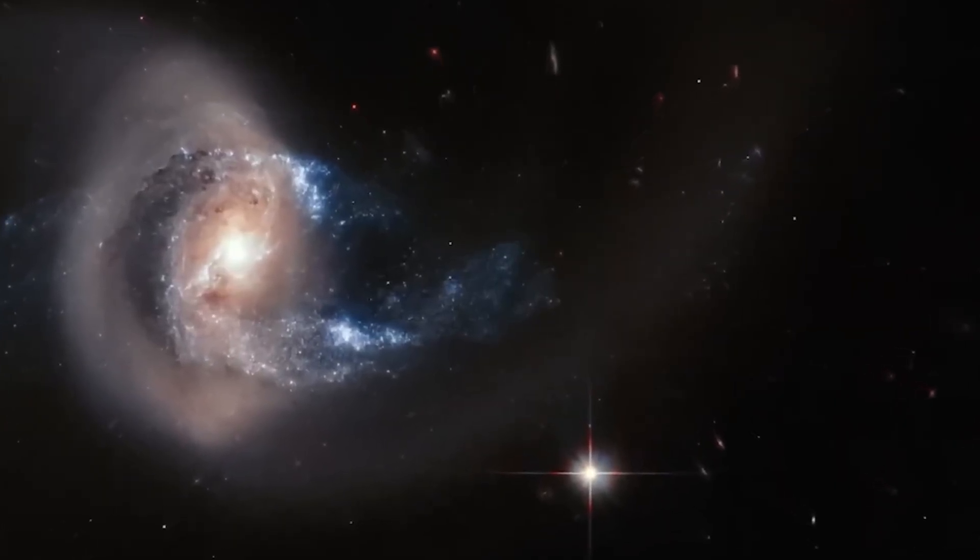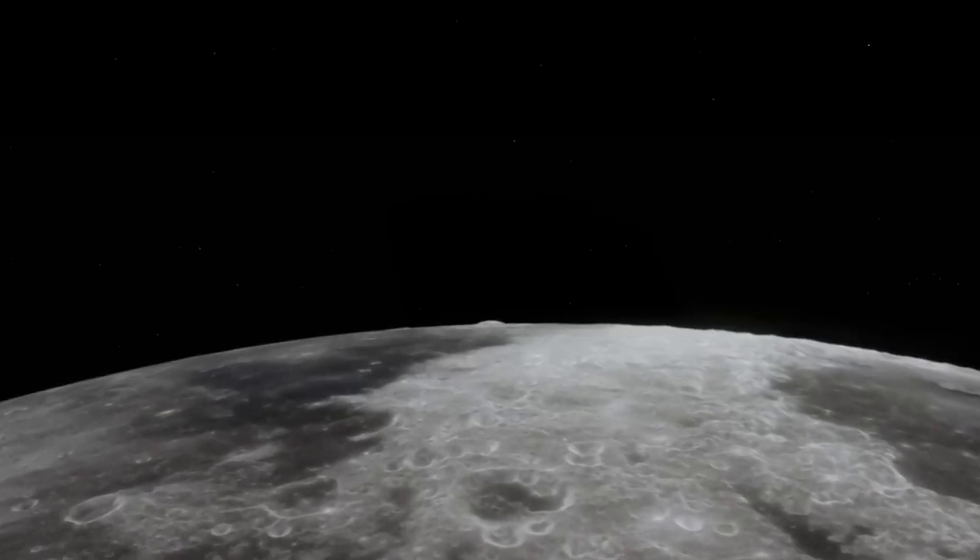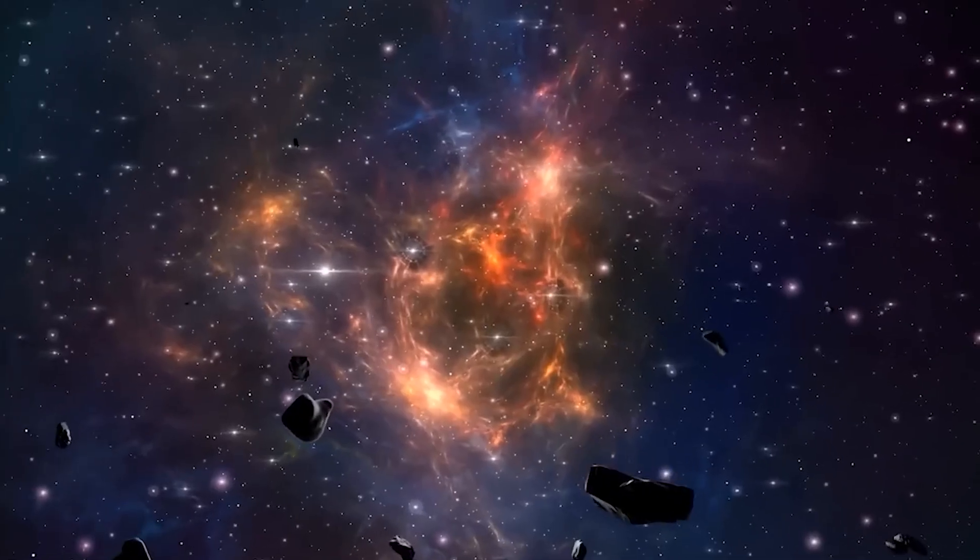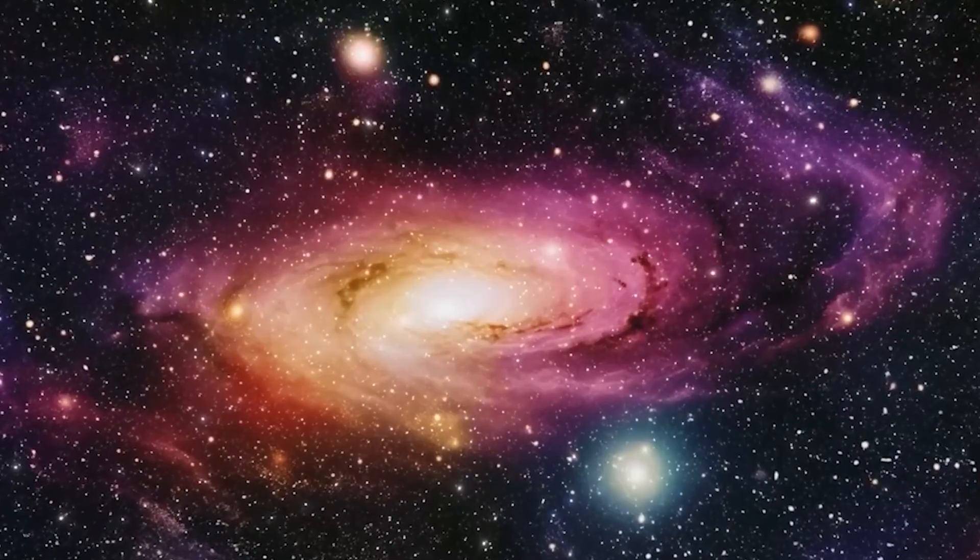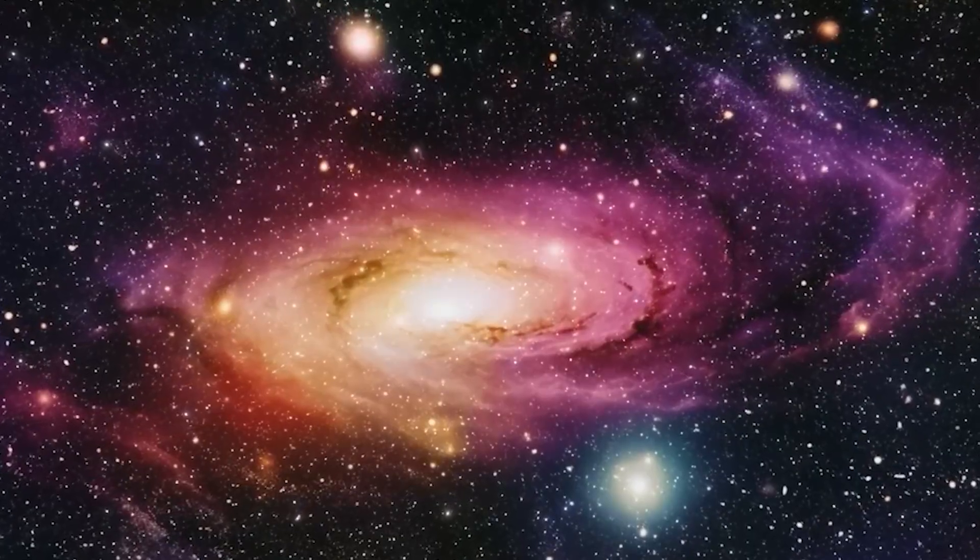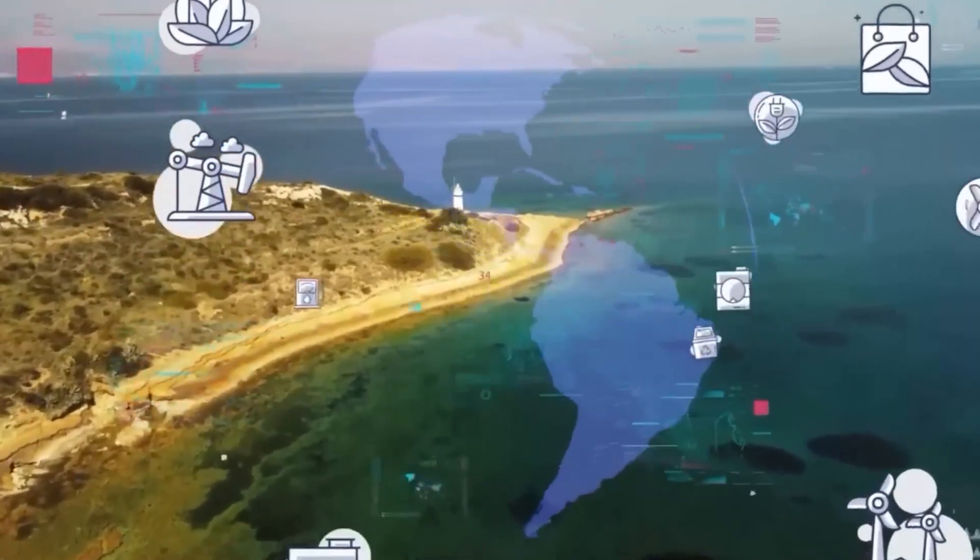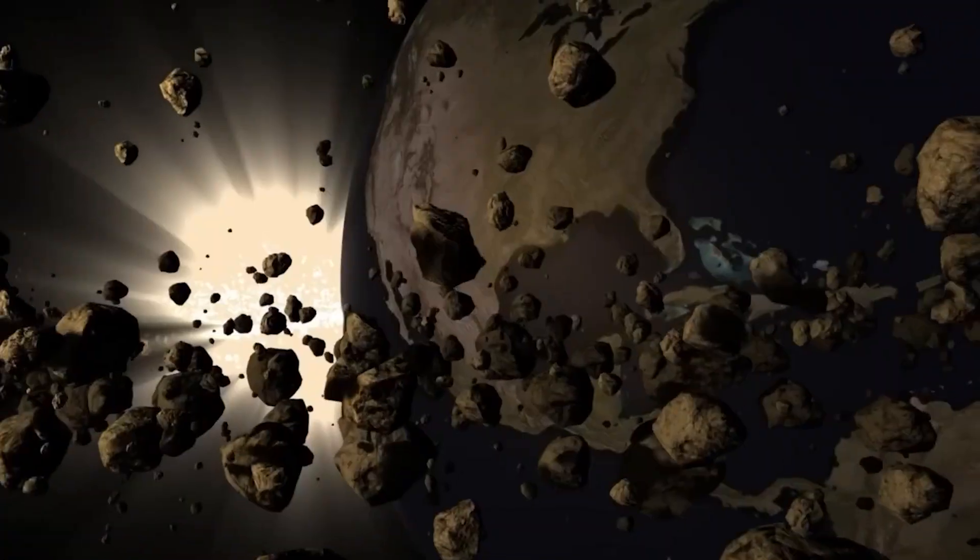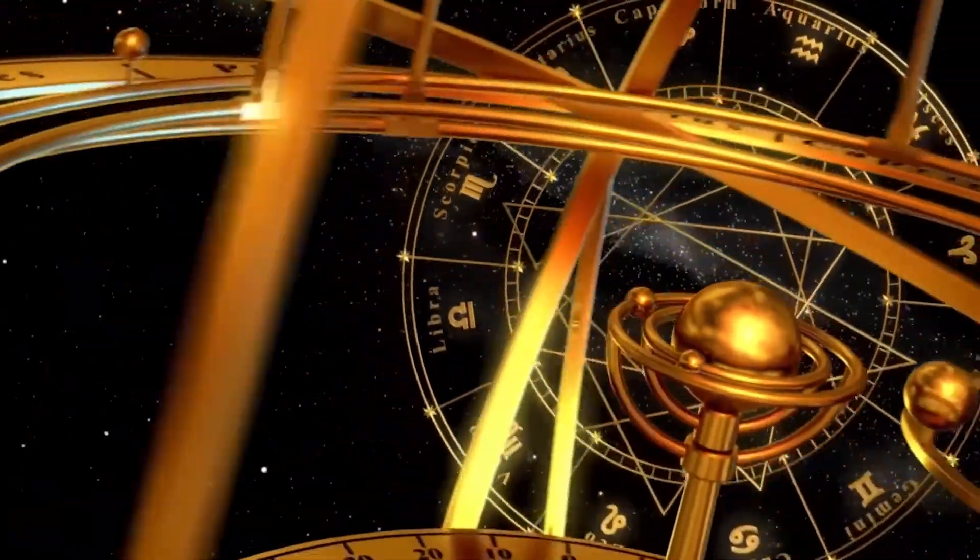Beyond Mars lies the asteroid belt, a vast and chaotic region filled with millions of rocky bodies. One particularly intriguing asteroid Hubble observed is 6478 Gault, often simply called GT, which despite being classified as an asteroid, exhibits a strange comet-like appearance with twin tails. Imaged in 2019, this object is believed to display such features due to the YORP effect,